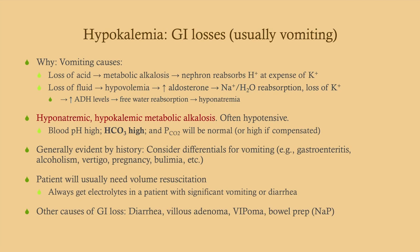GI losses: vomiting causes loss of acid, resulting in metabolic alkalosis. To preserve acid, the nephron reabsorbs protons at the expense of potassium, wasting potassium. Loss of fluid causes hypovolemia, increasing aldosterone via the RAAS, causing sodium and water reabsorption at the expense of potassium. ADH also rises, causing free water reabsorption and possibly hyponatremia. So hyponatremic, hypokalemic metabolic alkalosis likely indicates GI loss — usually vomiting from gastroenteritis, alcoholism, vertigo, or bulimia.